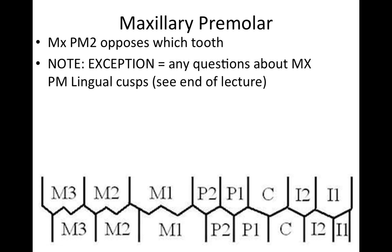The mesial buccal cusp of the mandibular first molar opposes which anatomical parts of which teeth? The mesial buccal cusp of the mandibular molar opposes the marginal ridge of the same-numbered maxillary molar — so the first molar — and the distal marginal ridge of the tooth mesial to it. This is the language the boards love to use. They're not going to specifically say which tooth it is; you have to be able to visualize what's mesial or distal to that tooth.